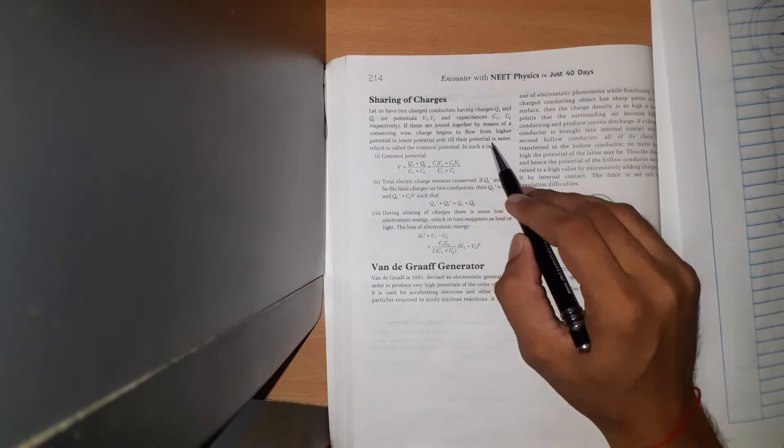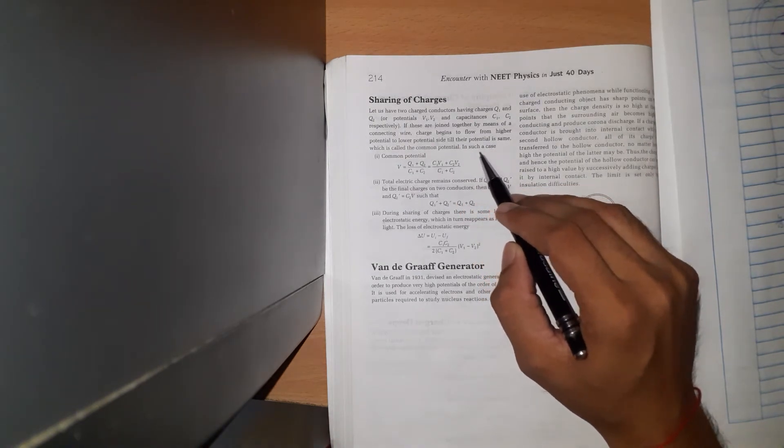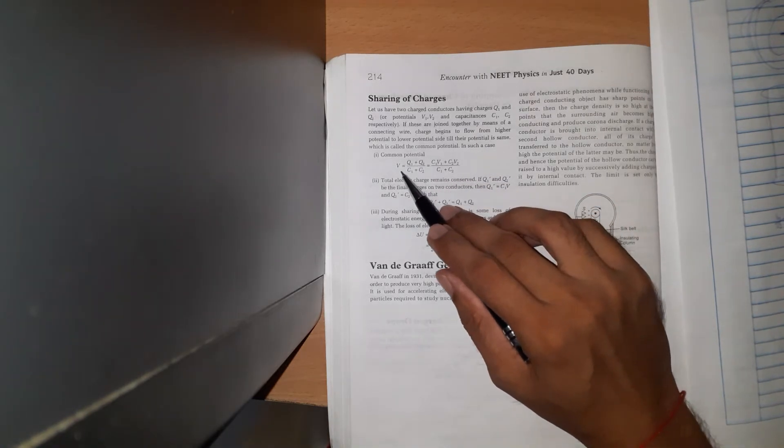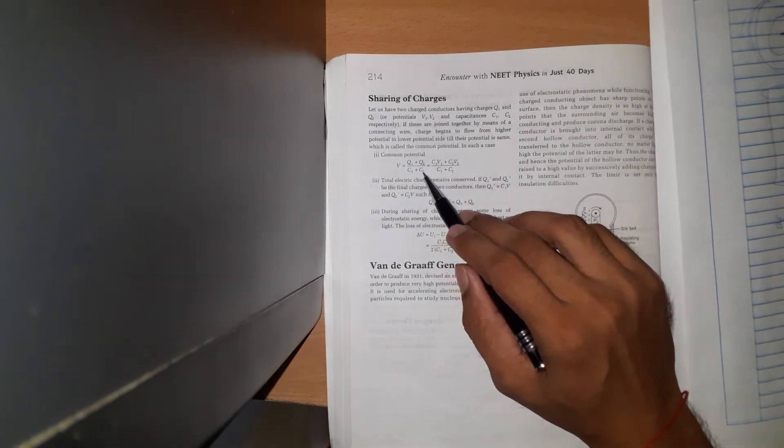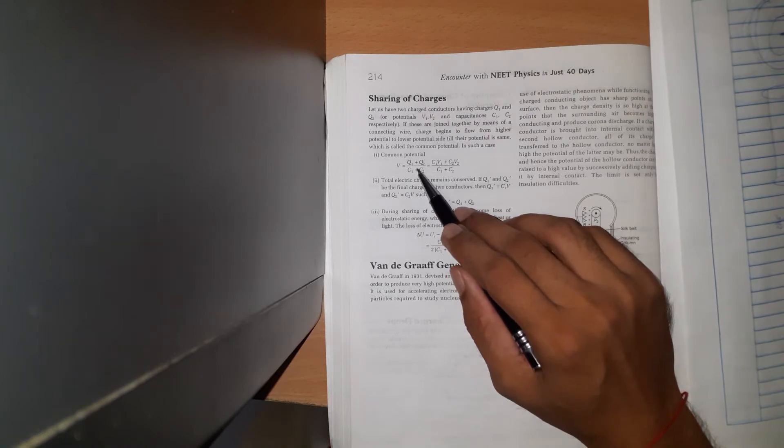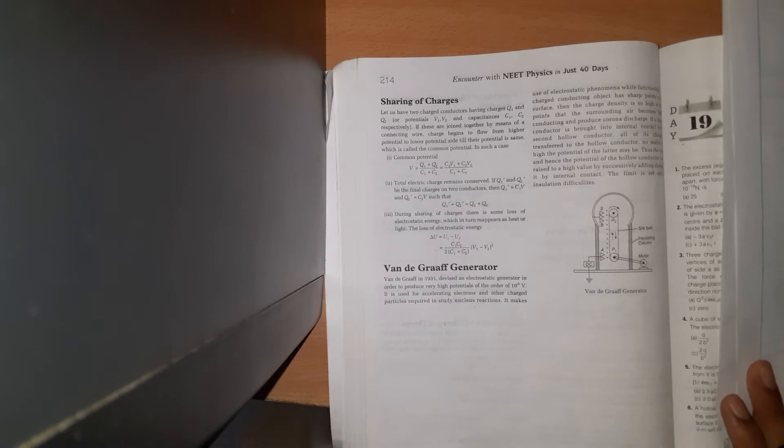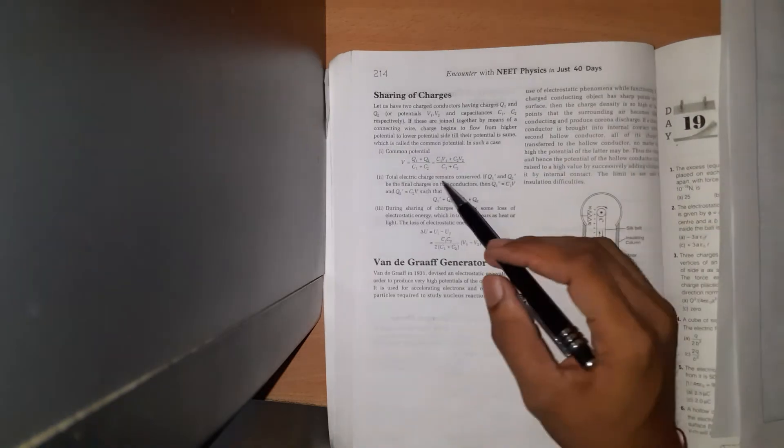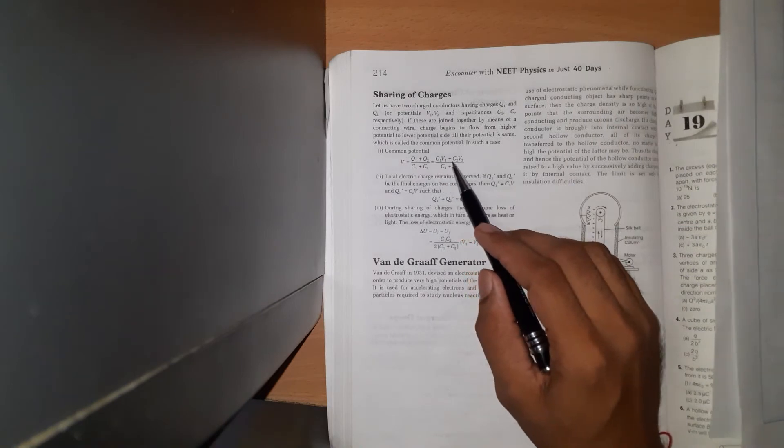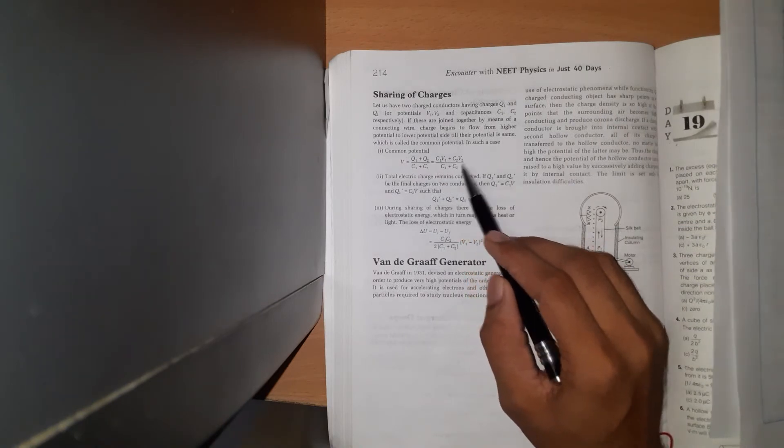The charge flow continues until the potentials become equal, which is called the common potential. The common potential V is equal to Q1 plus Q2 upon C1 plus C2. This can also be written as C1 V1 plus C2 V2 upon C1 plus C2.